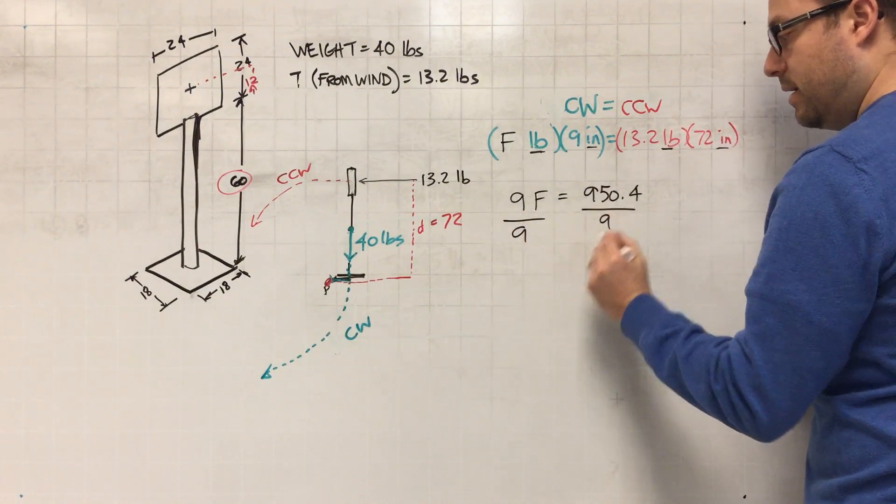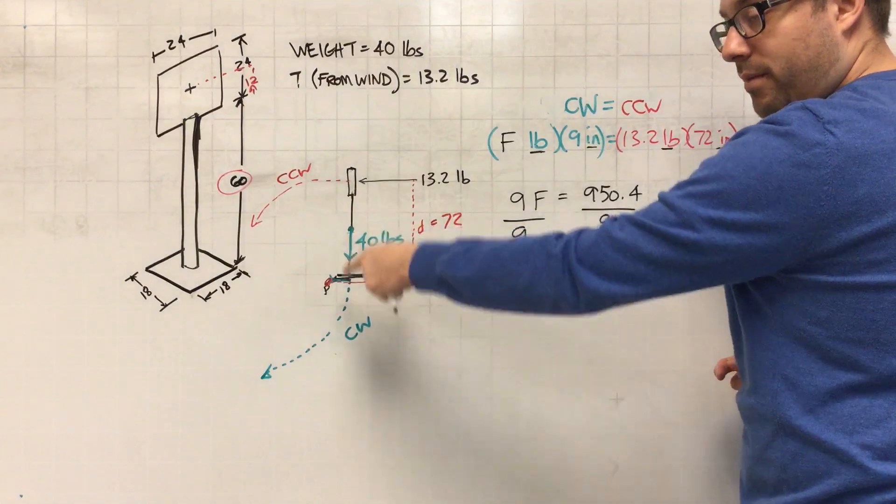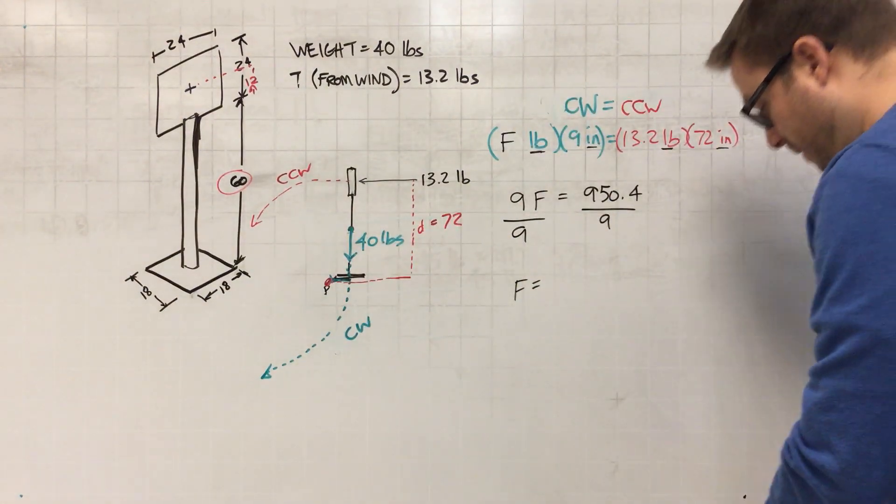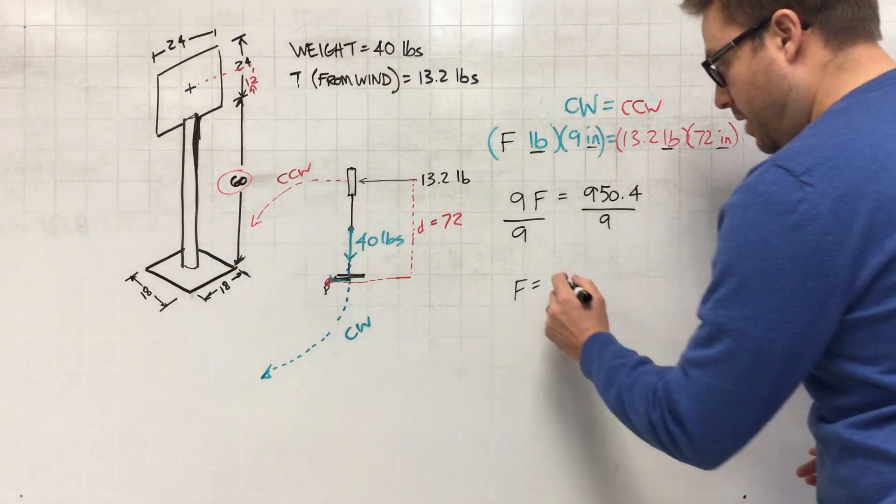And now I know that I need to divide both sides by 9, and that'll give me the amount of force which is the weight. I should have called that W, that would have made a lot of sense. But if I divide by 9 that'll tell me the total weight that I need in order to keep this thing in place.